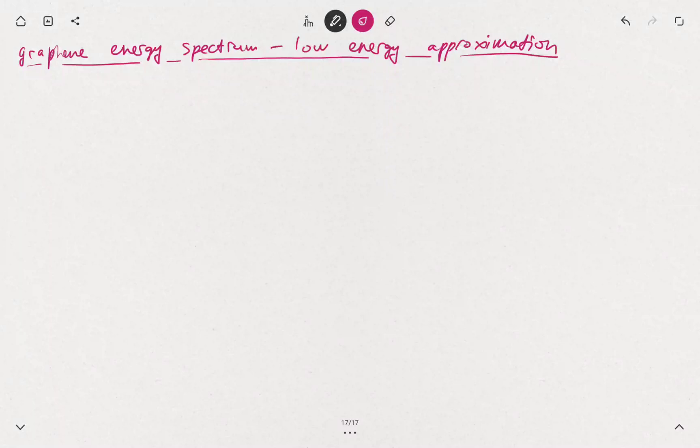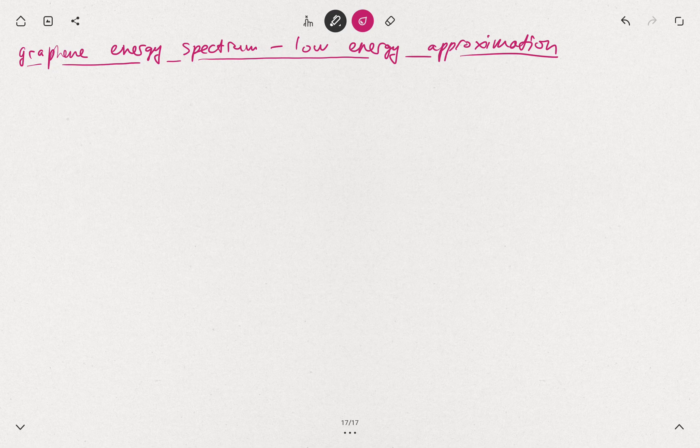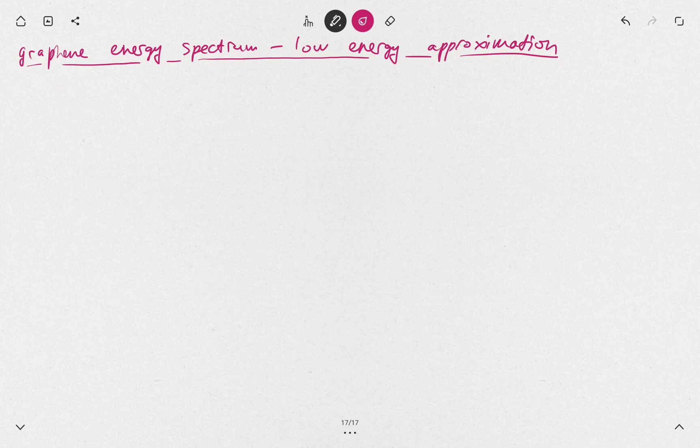Let's discuss the low energy approximation of graphene electron spectrum. The solution at the proximity of the Dirac points has actually linear dispersion relation.